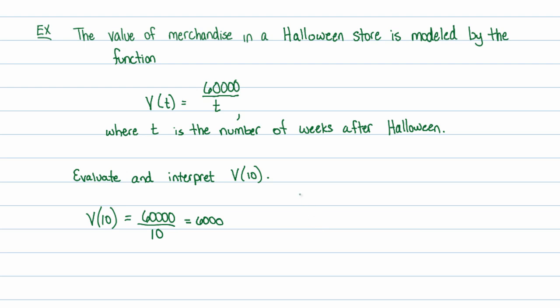Now, the question is, what does that mean? That V of 10 is equal to 6,000. It means that in 10 weeks, because our input variable stands for the number of weeks that have passed, in 10 weeks, the market value is $6,000. I don't know if that's absolutely realistic, but the fact is that the value of their stock is decreasing as time goes on, because who wants to buy Halloween stuff right after Halloween? Unless you're stocking up for next year. So as time moves on to get into Christmas, nobody's really buying Halloween costumes.